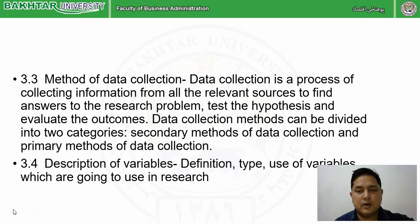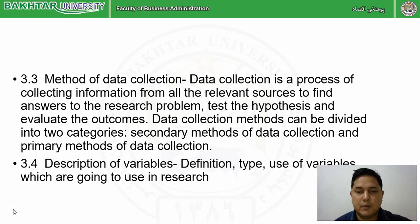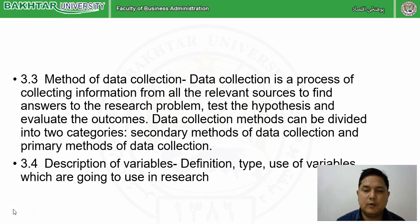In chapter three we also address the different types of data — primary data collected through a questionnaire or survey, and secondary data from secondary sources. We also describe the variables: how many variables there are, which category they belong to, and which are dependent and independent variables. So chapter one is introduction, chapter two is literature review referring to previous work, and chapter three is research design covering population, sample size, sampling procedure, data types, data collection methods, and variables.